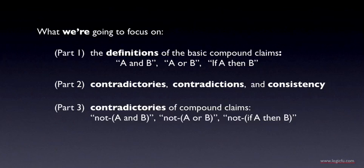In part three, we'll look at how to write and interpret the contradictories of the basic compound claims. Not A and B, not A or B, and not if A then B.